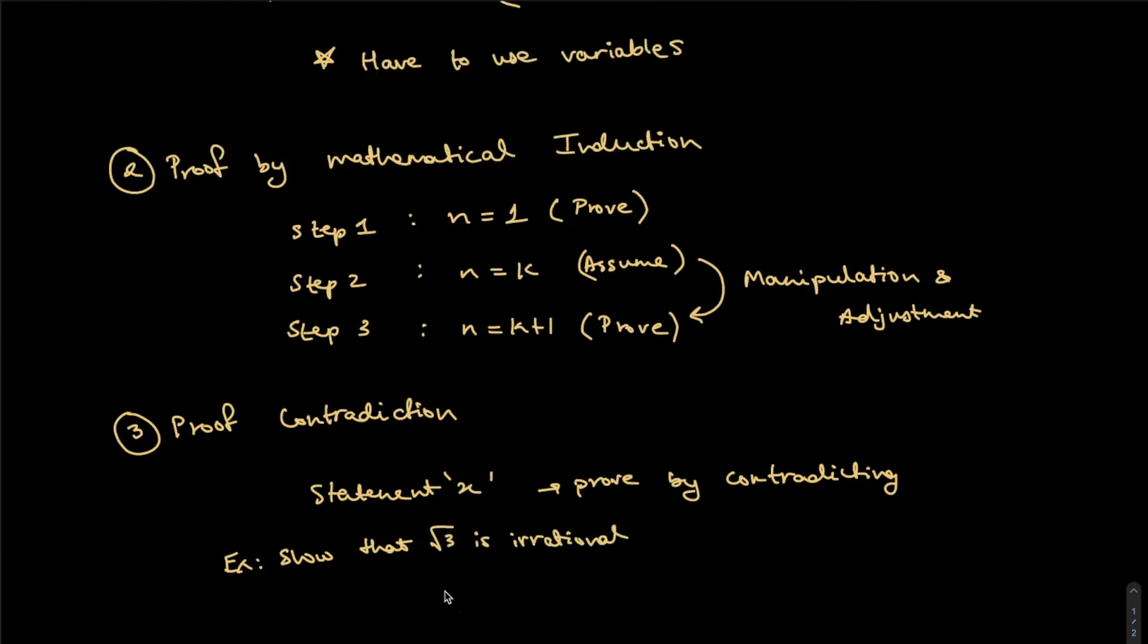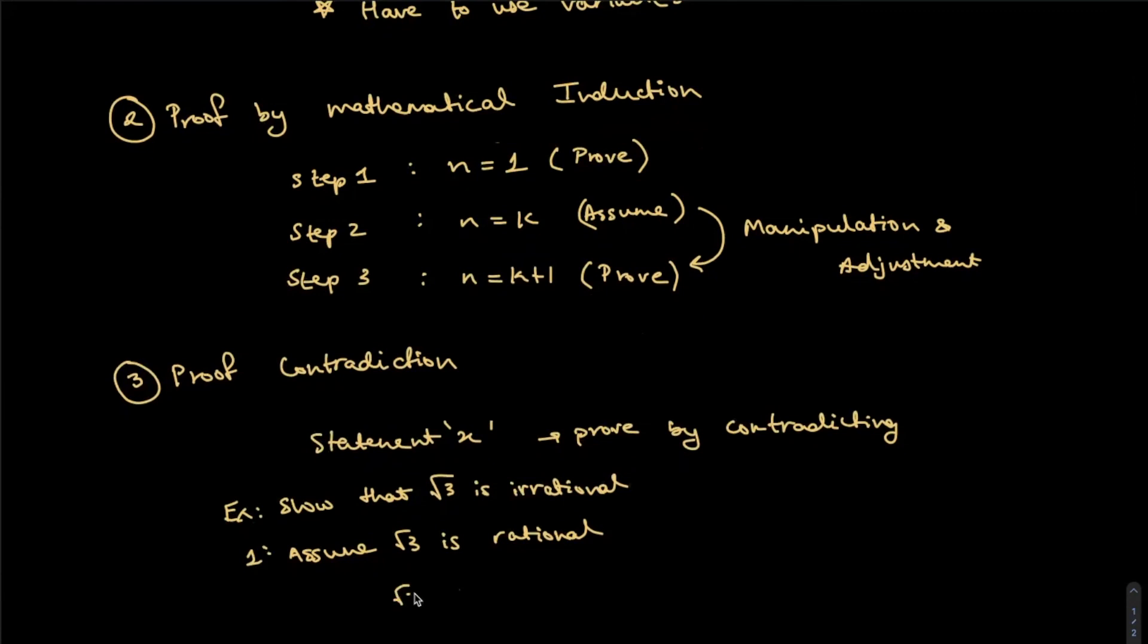So what we do, what a first step here would be, we assume square root of three is rational. We contradict it. That's what we do here. So we say that square root of three is rational. And then we work our way around. So if it's rational, we can write it in terms of P by Q form. And then we do more simplification. We work around it.